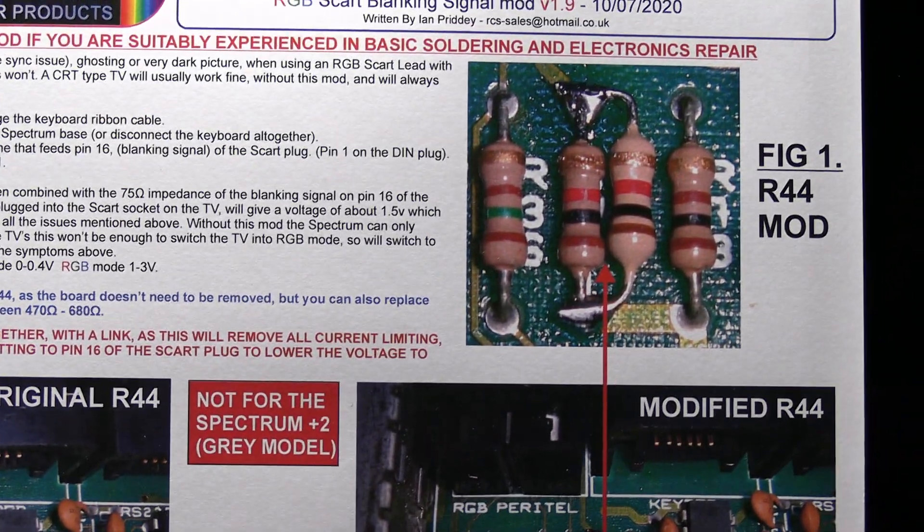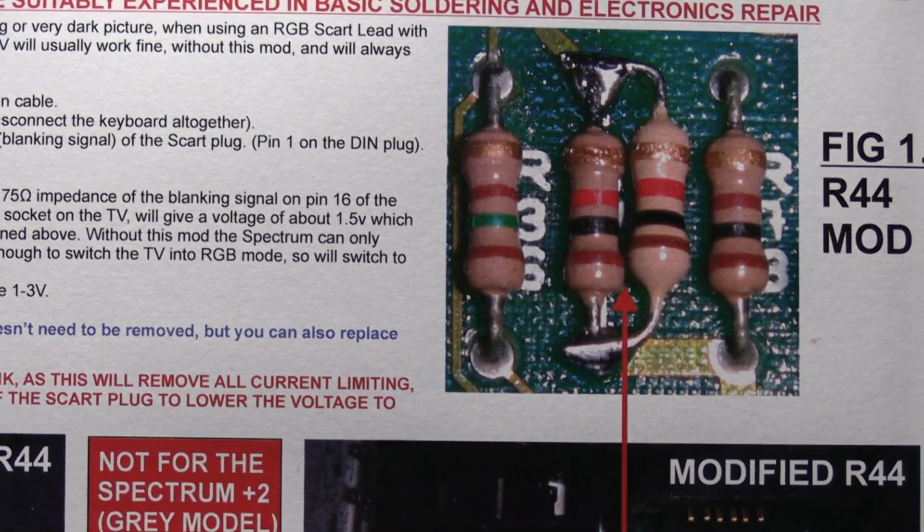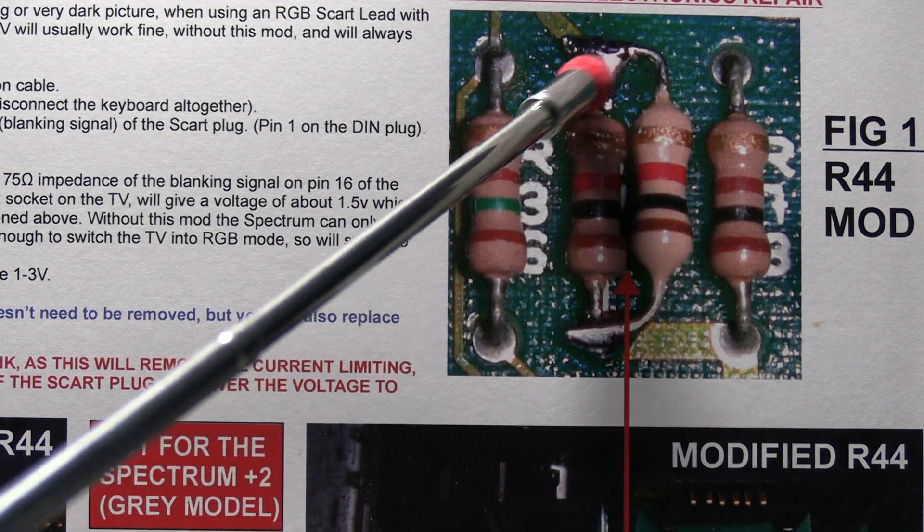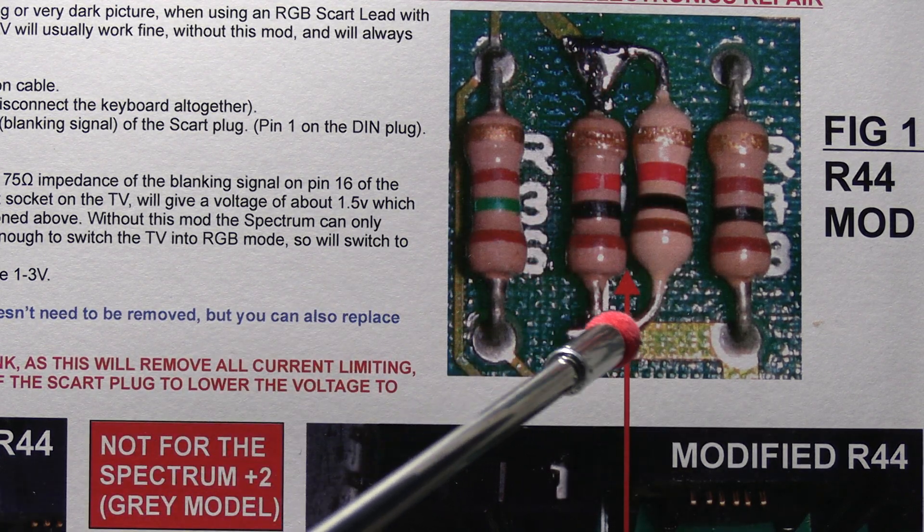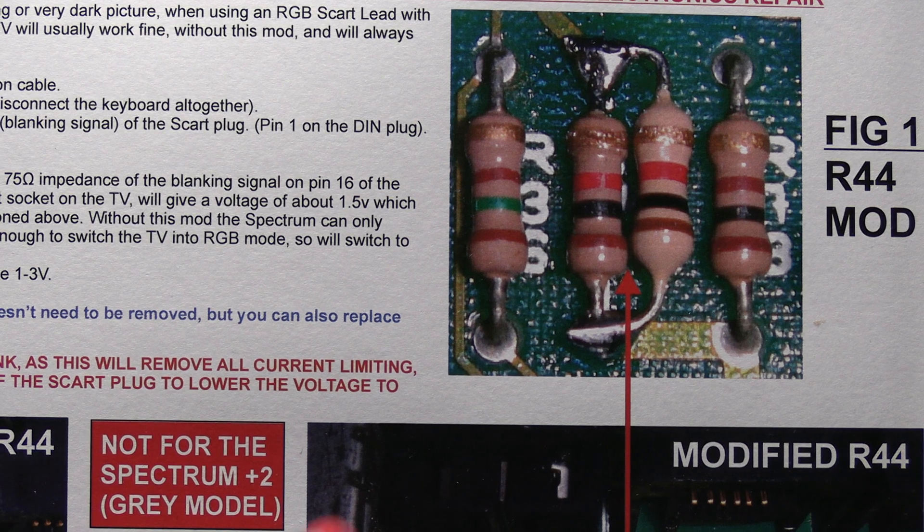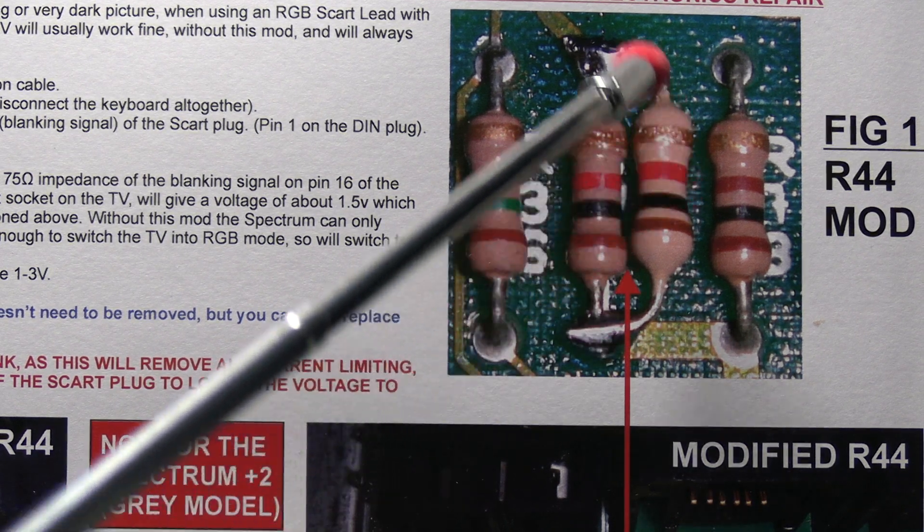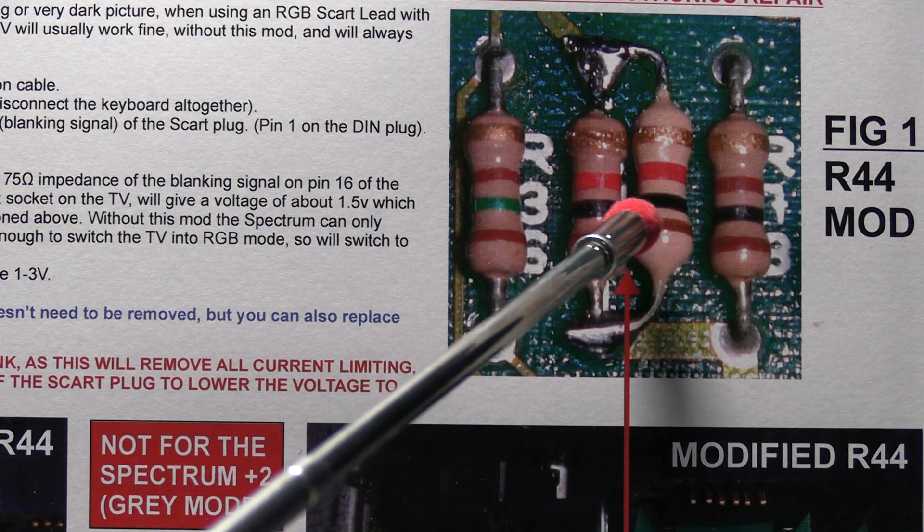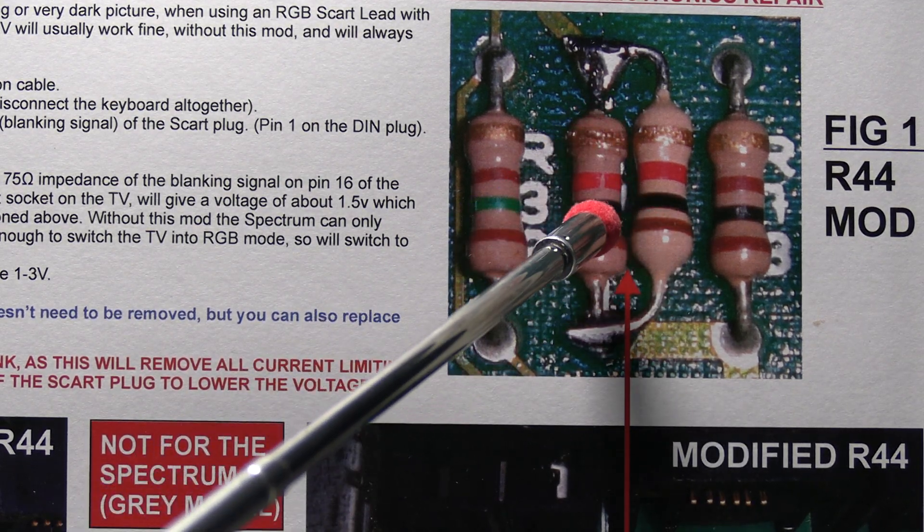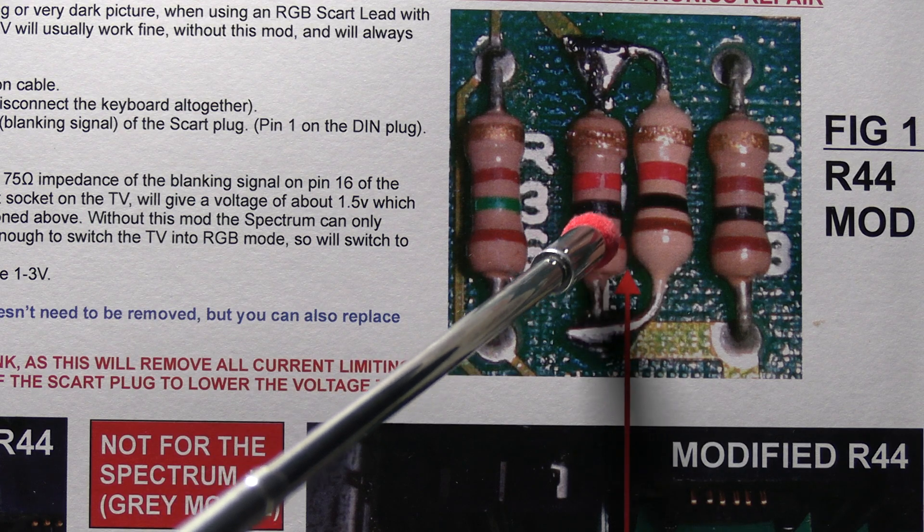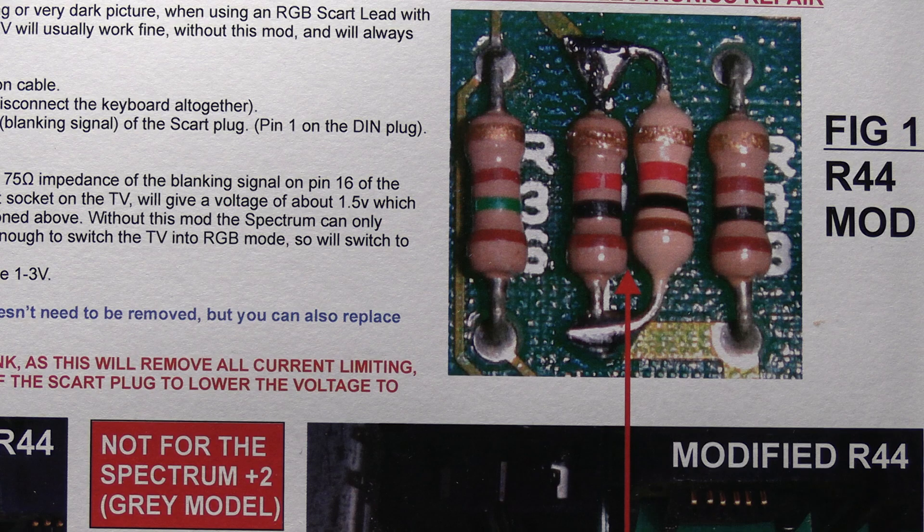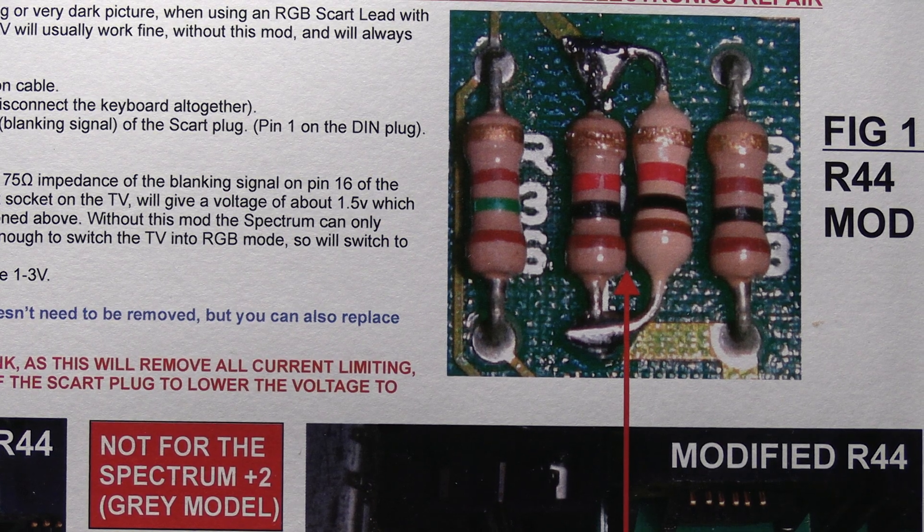is just to solder another 1k resistor in parallel with the existing 1k resistor. For those who know electronics you'll know that if you connect two resistors in parallel, if they're the same value then the total resistance will be half the value of one of those resistors. So in this case we've got two 1ks so the total resistance will be 500 ohms.